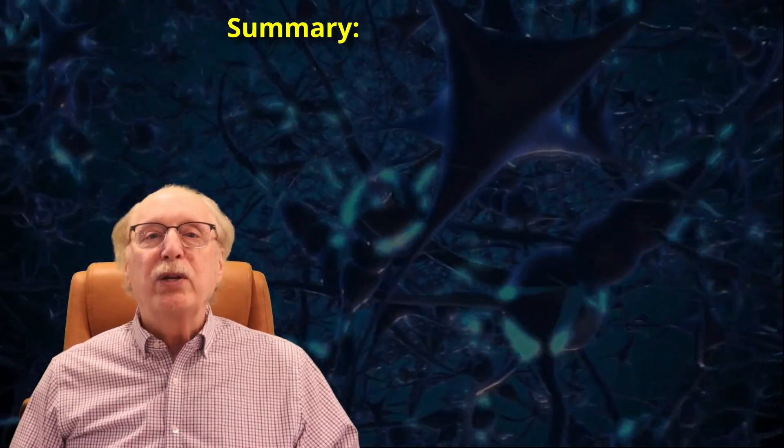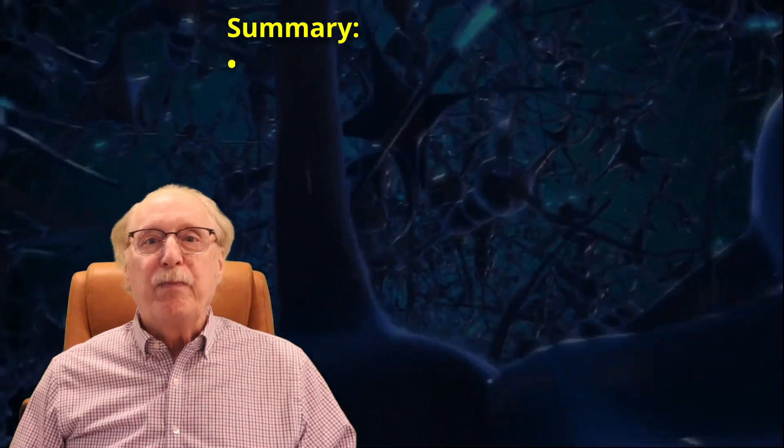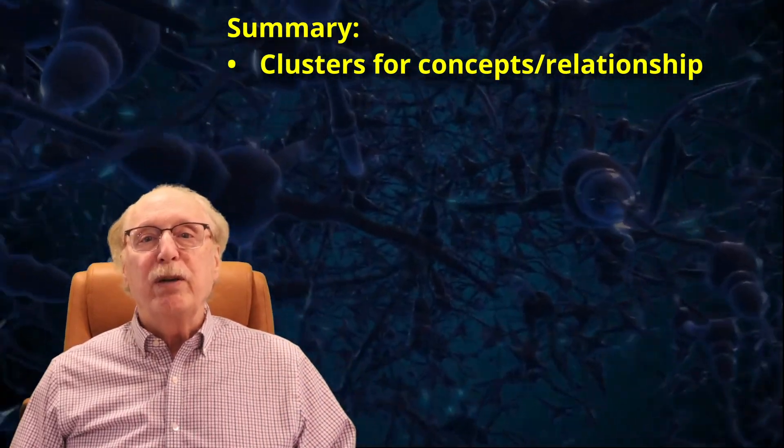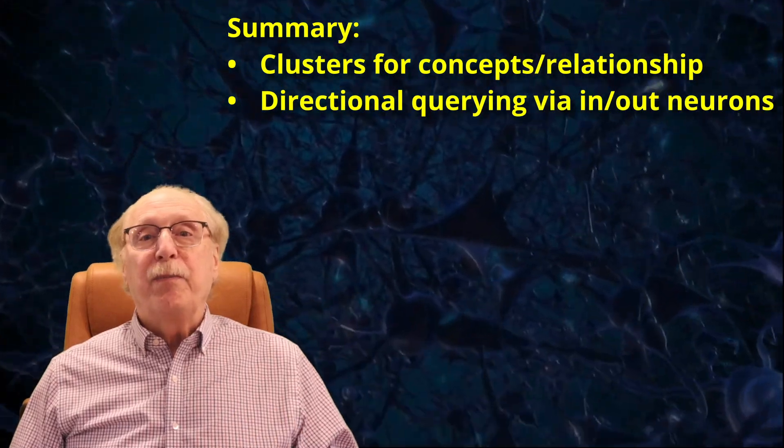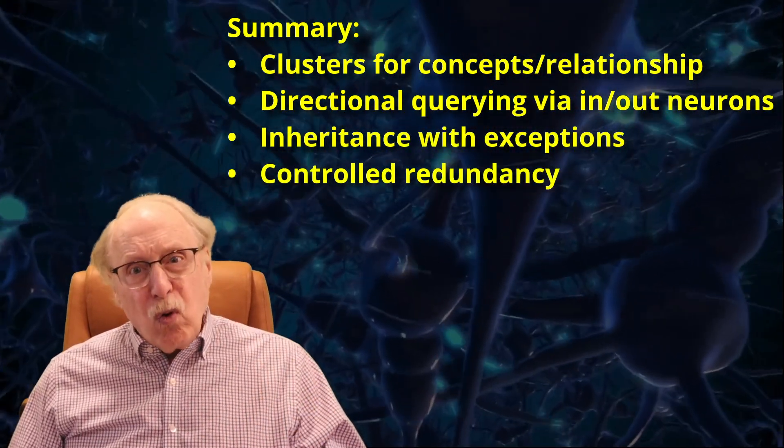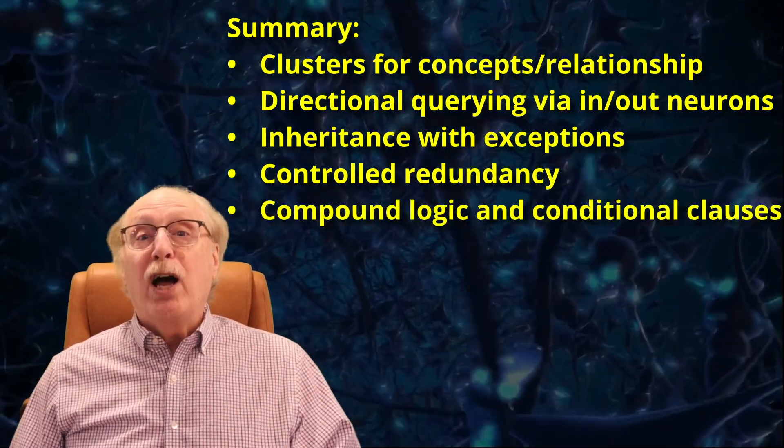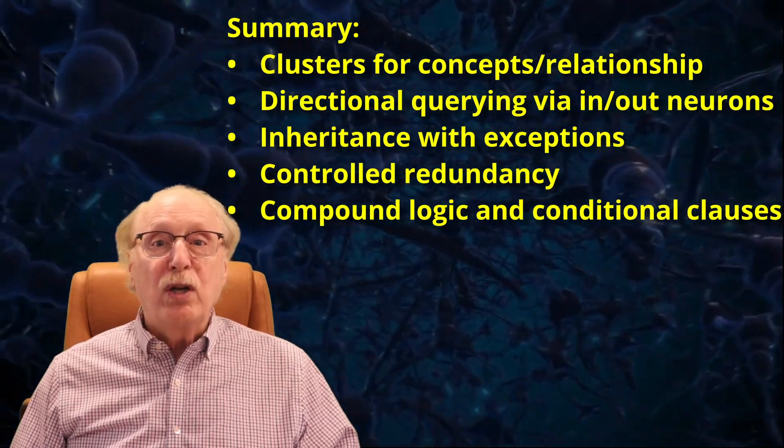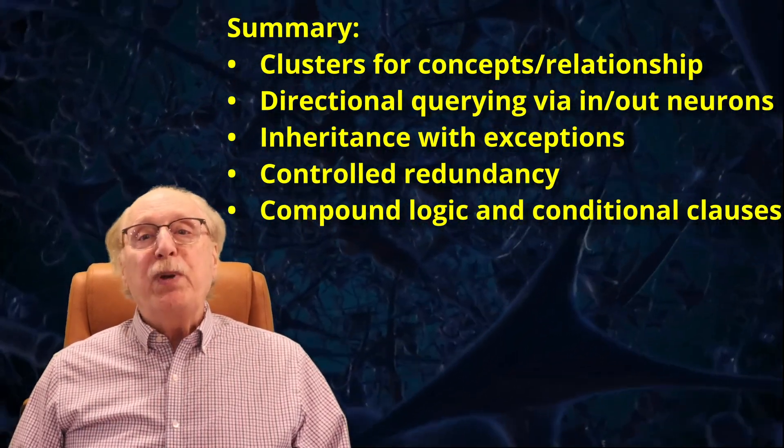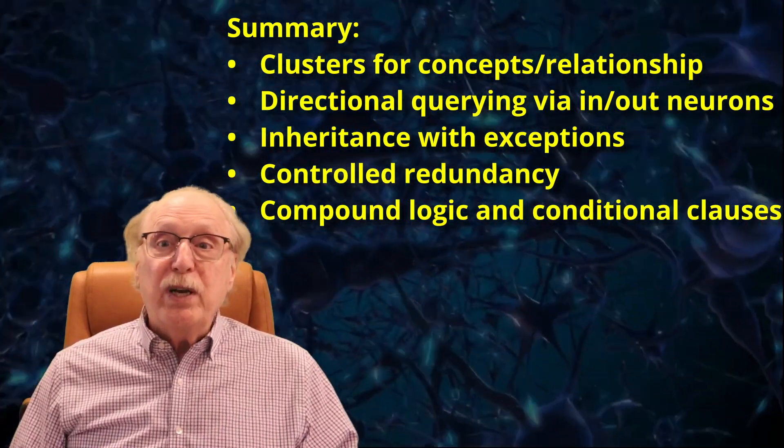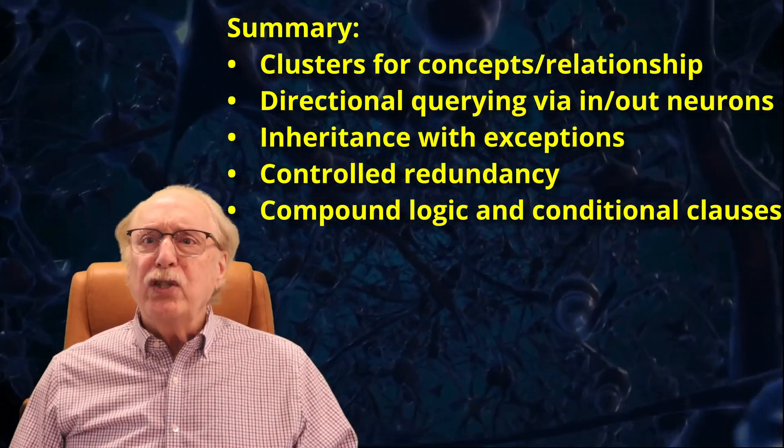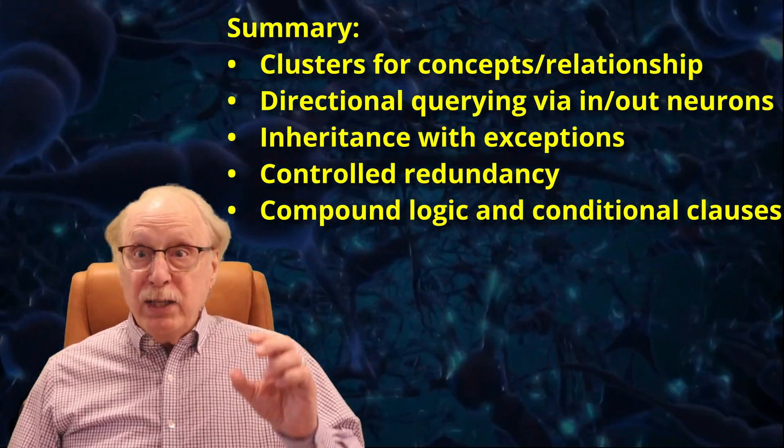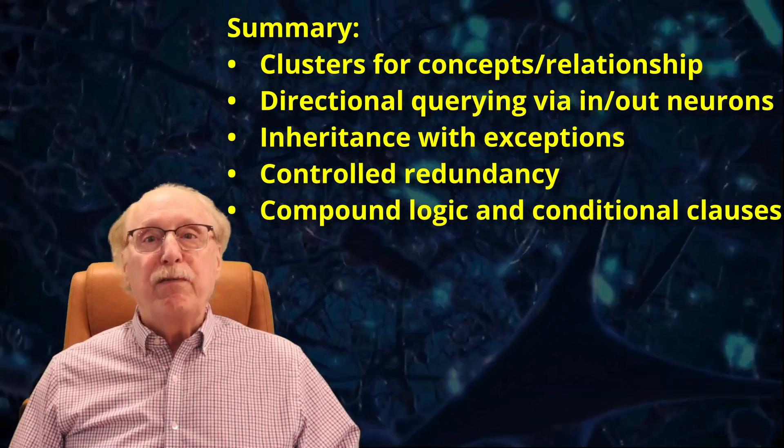With these enhancements we move closer to a model of knowledge representation which is biologically plausible. We now have clusters for each relationship, directional querying via in and out separate neurons, inheritance with exceptions, controlled redundancy, and compound logic with conditional clauses. Each piece mimics a property observed in human cognition, not symbolically, but functionally. And this is essential. True intelligence isn't just about learning patterns. It's about representing and manipulating knowledge in a flexible, structured way.